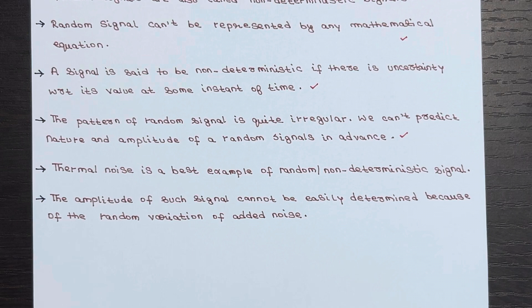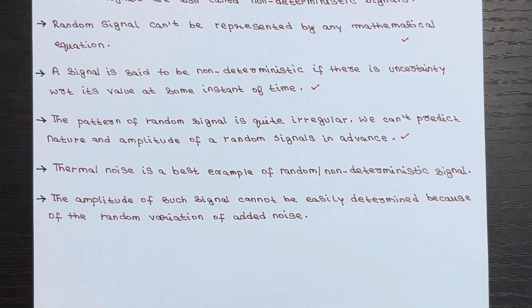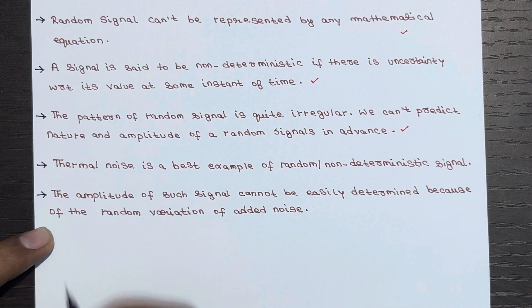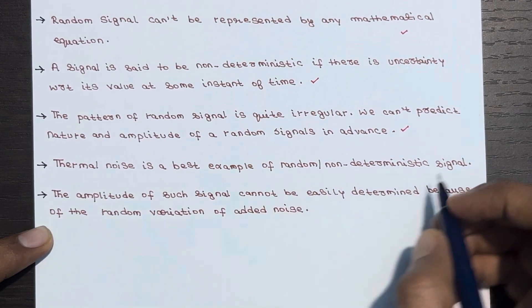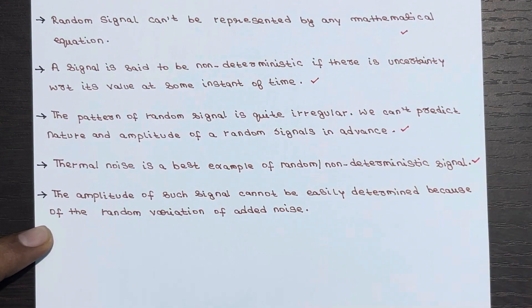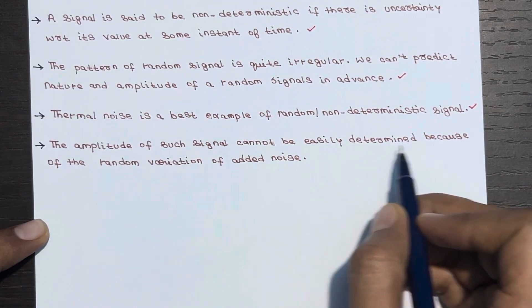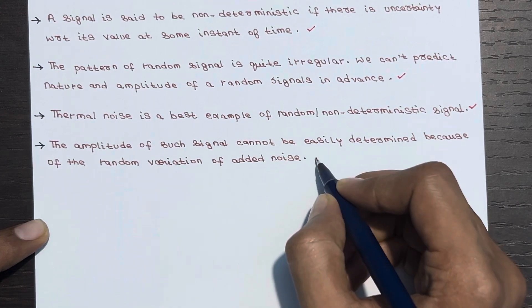Thermal noise serves as a perfect example of a random or non-deterministic signal. Due to the random variation of added noise, determining the amplitude of such signals becomes quite challenging. The amplitude of such signal cannot be easily determined because of the random variation of added noise.